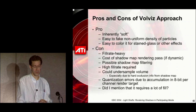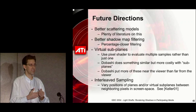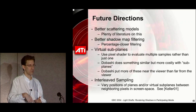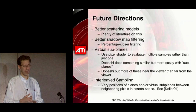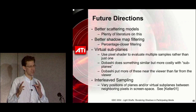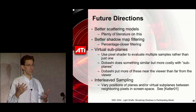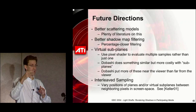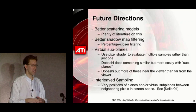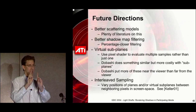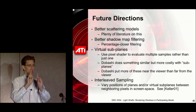In the future, there are better scattering models we can use. Better shadow map filtering is an obvious one, and might even let us reduce the number of planes. Virtual subplanes is something you could potentially do. Both the virtual subplane idea and interleaved sampling come from a paper by Keller and Hydric called 'Interleaved Sampling,' where you can sort of sample multiple times in the volume per sampling plane by walking a little bit along the ray and evaluating a few more times. You can also offset the place you start along that ray for neighboring pixels on the screen, giving a dithered effect that helps hide quantization and aliasing artifacts. These slides are available online at ati.com/developer.